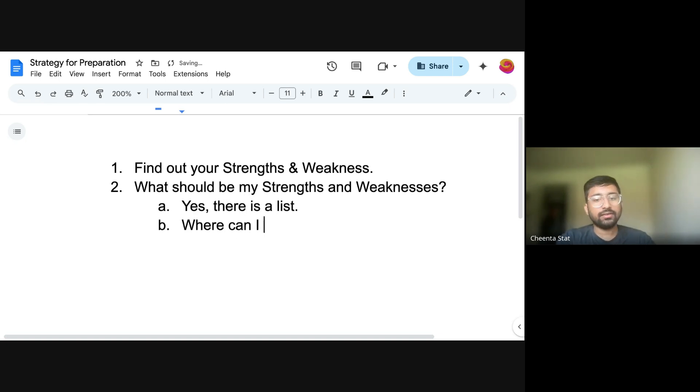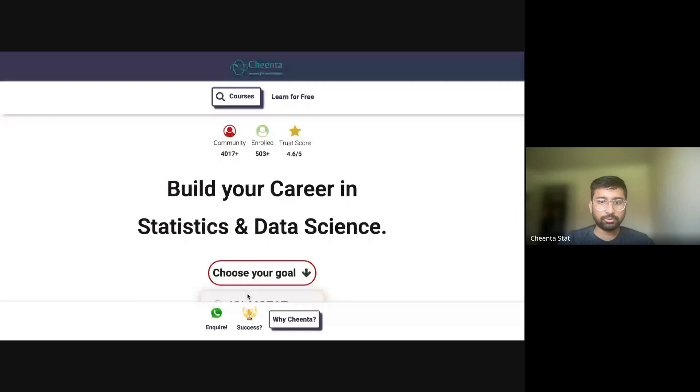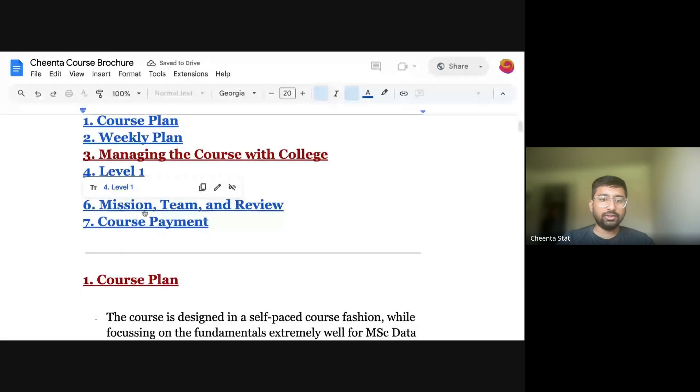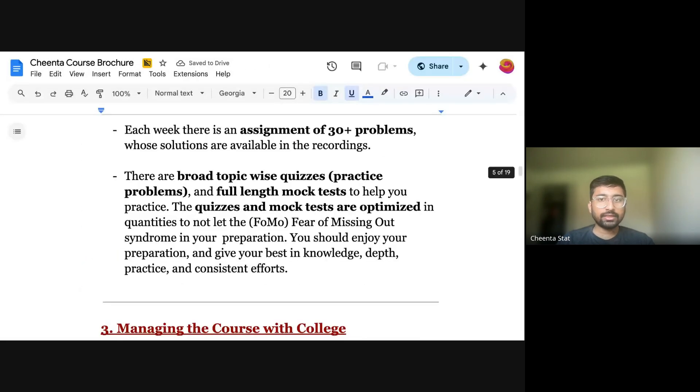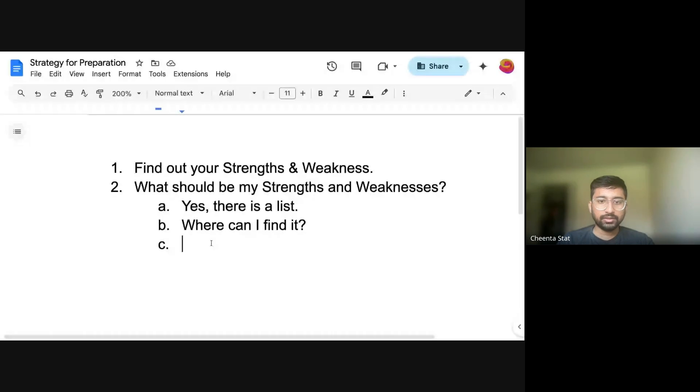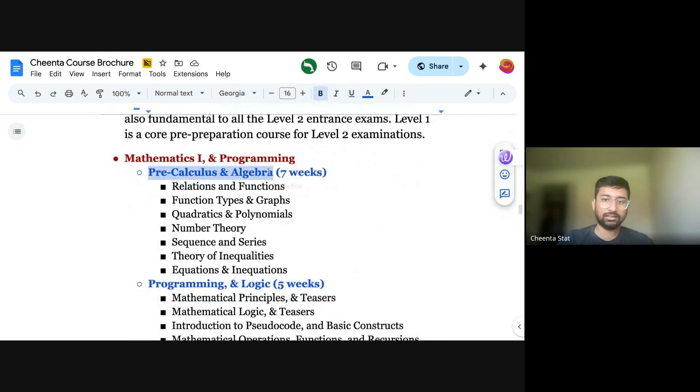Where can I find it? Here. So you go and search Tinta MSC statistics, that brochure, and that's why we have given it over here. And you go to level one or level two. So when you go to level one, you will see that, so let me write here. I will paste it here, and when you go here, you will see that we have these topics. So we have mathematics and programming in that we have pre-calculus.